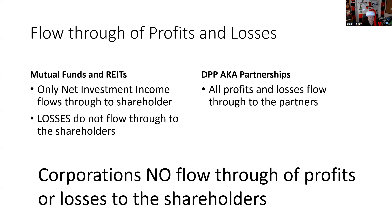Now, with corporations, there is no flow-through of profits or losses to the shareholders. The tax consequences are realized by the corporation, and then the board would decide whether or not to distribute a portion of the earnings as a dividend to the shareholders. You do not have a right to a dividend — you only have a right to a dividend if declared. If you think about it, the corporation makes money, pays taxes, then pays you a dividend, and then you're paying taxes on that dividend as well. So double taxation.